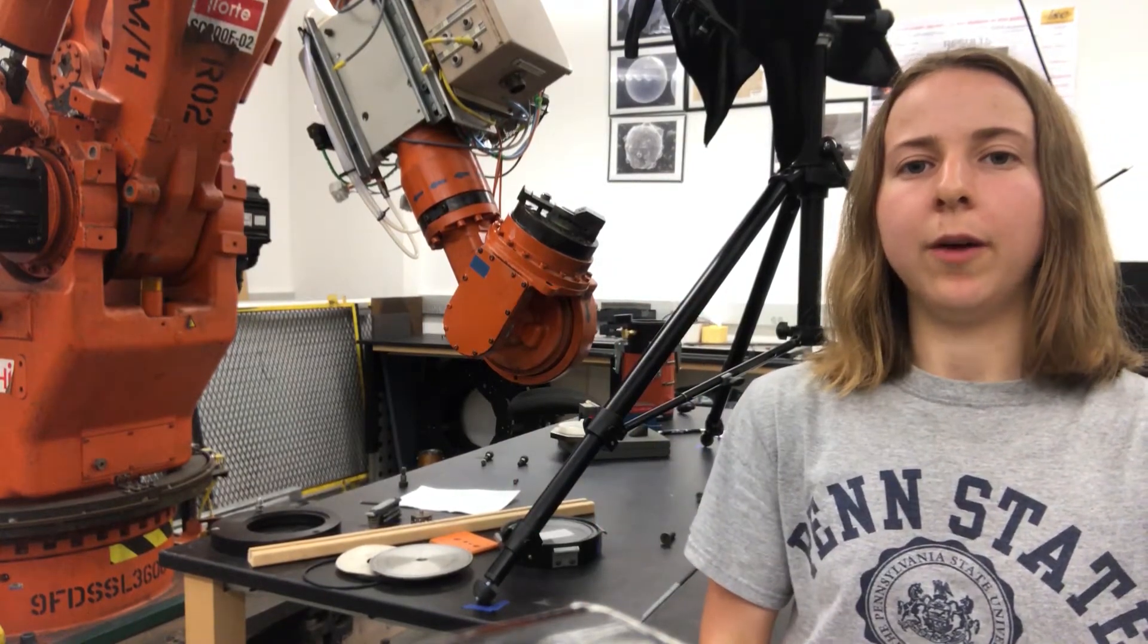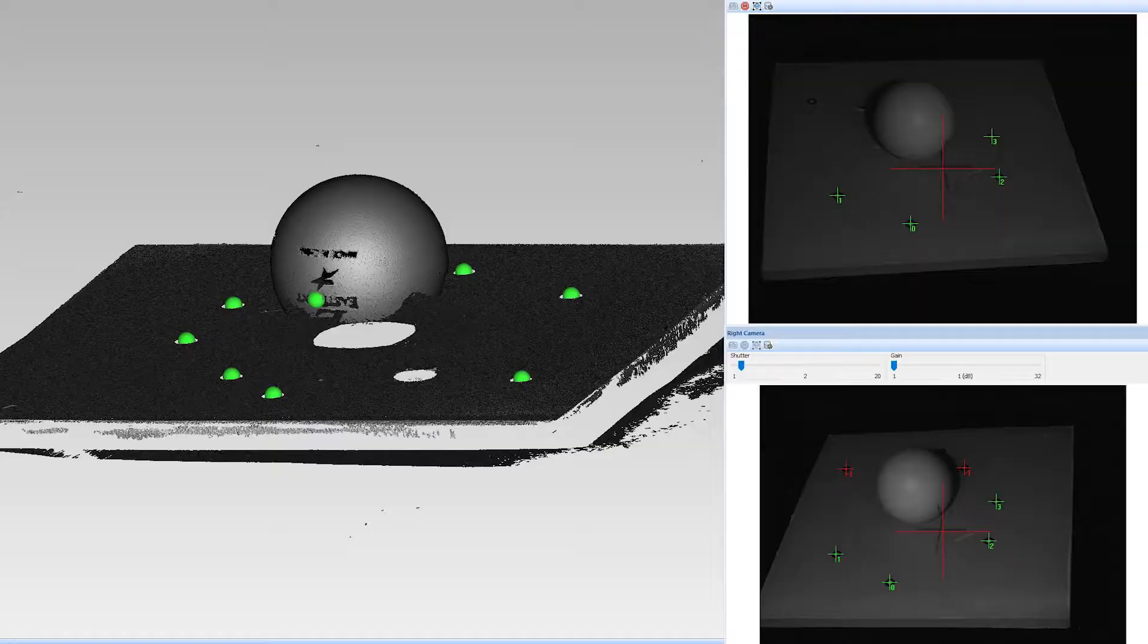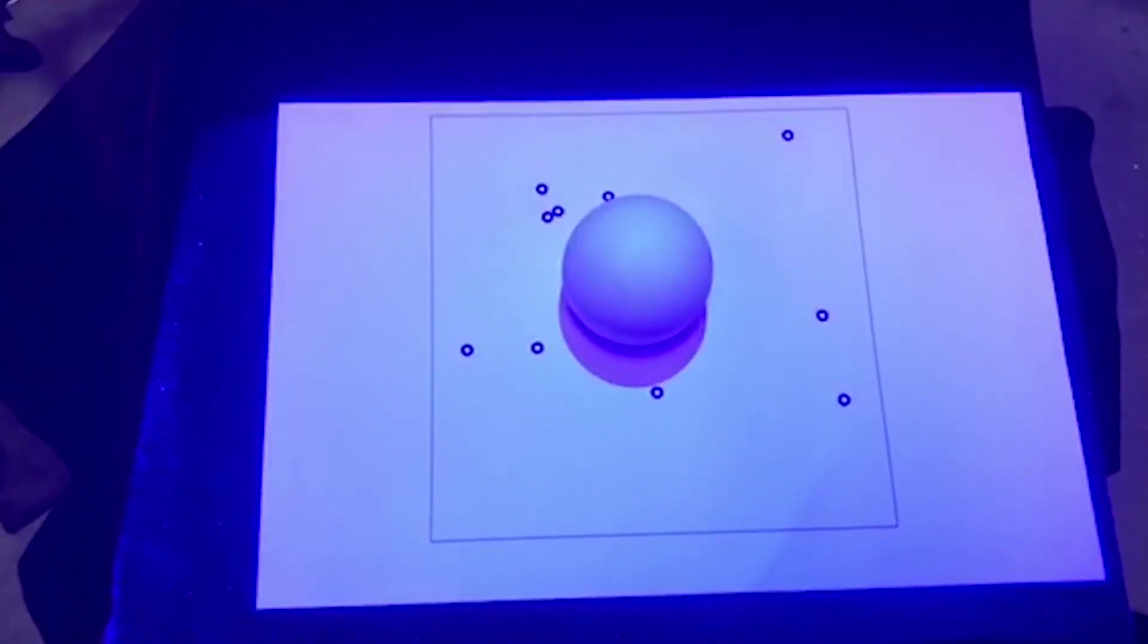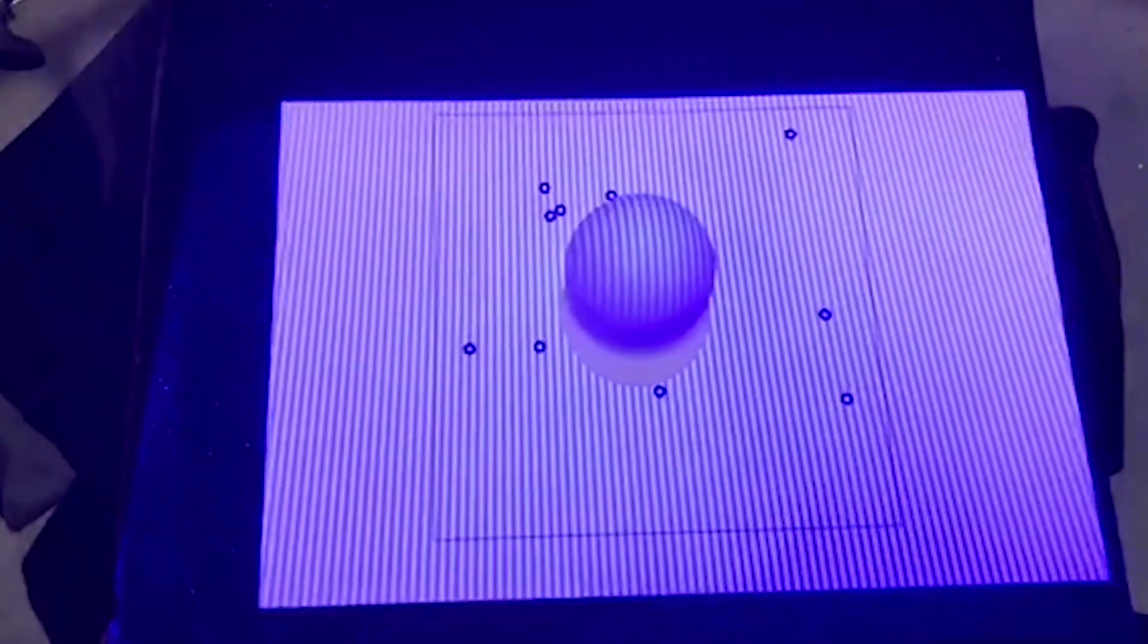The 3D scanner that we have works by projecting a light pattern onto an object and then two cameras are able to read distortions in that pattern. We can scan from several different angles in order to generate a CAD model of an object.